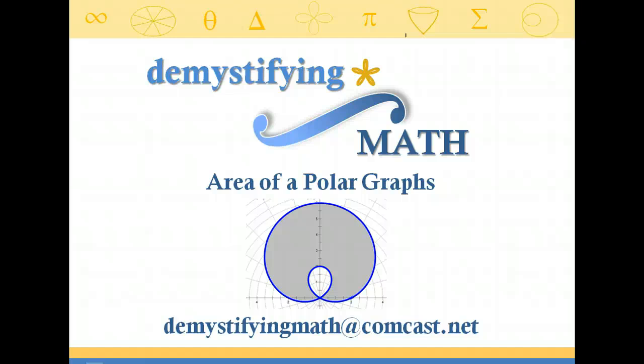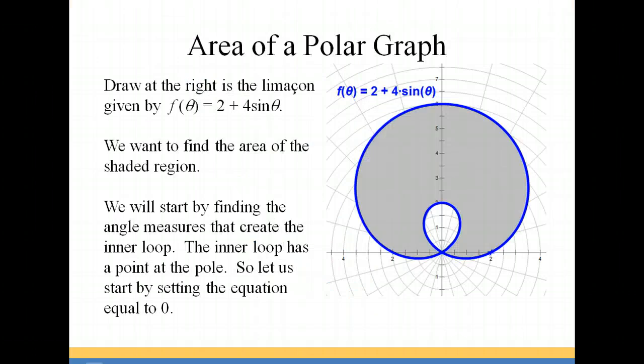Welcome to Demystifying Math. In this lesson, we're going to be finding the area of a polar graph. Specifically, what we're going to do is find the area in between the loops of the limaçon given by 2 plus 4 sine theta.